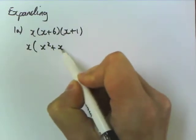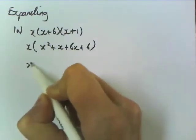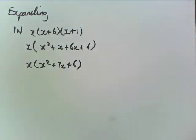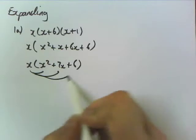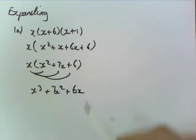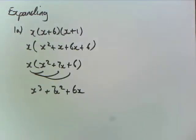x squared plus x plus 6x plus 6, so we end up with x squared plus 7x plus 6, and then you multiply everything in there by x. So we end up with x cubed plus 7x squared plus 6x. That's how easy those ones are.